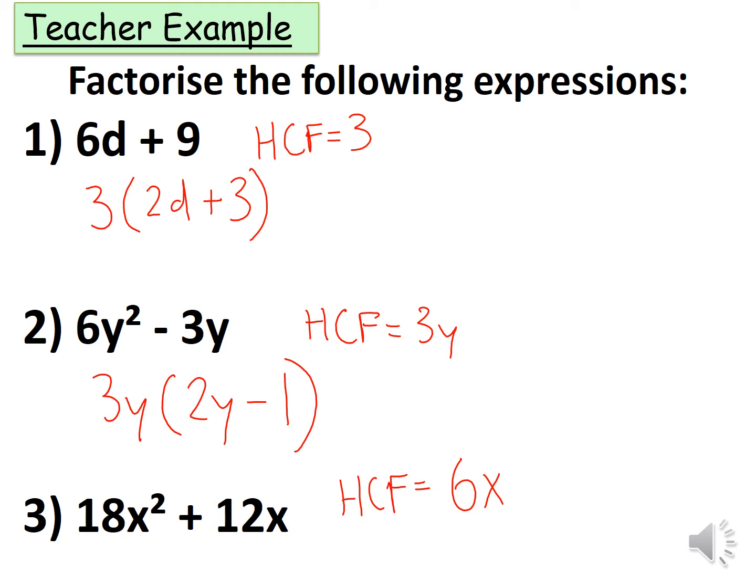So let's take out 6x from this expression. We've got 6x bracket, 18x² divided by 6x is 3x, and then plus 12x. We need to divide 12x by 6x which gives me plus 2x.